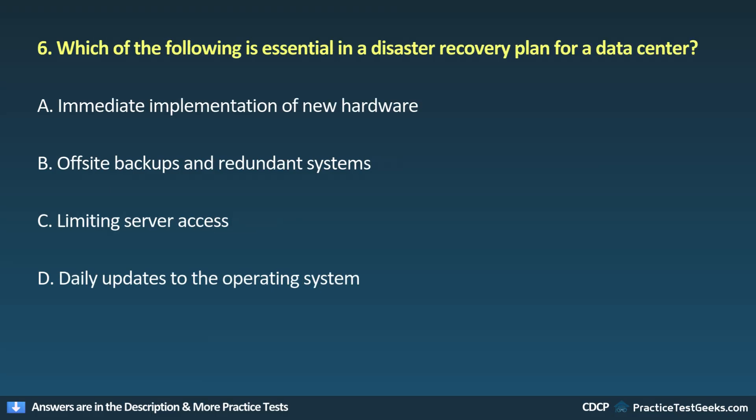Question 6. Which of the following is essential in a disaster recovery plan for a data center? A. Immediate implementation of new hardware. B. Off-site backups and redundant systems. C. Limiting server access. D. Daily updates to the operating system.